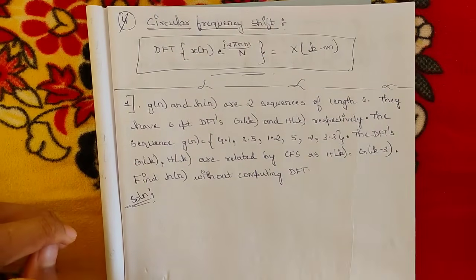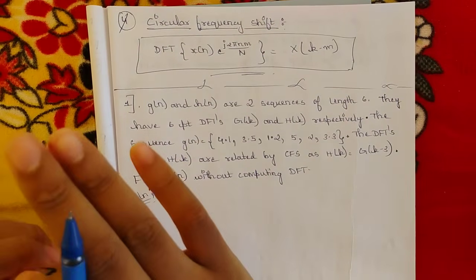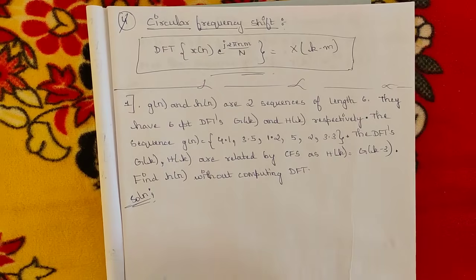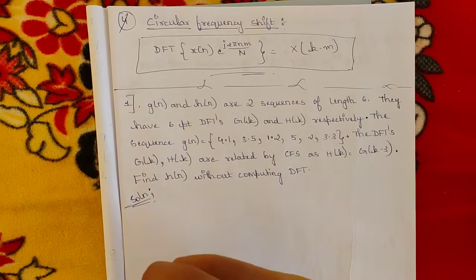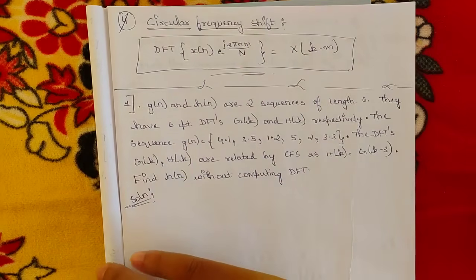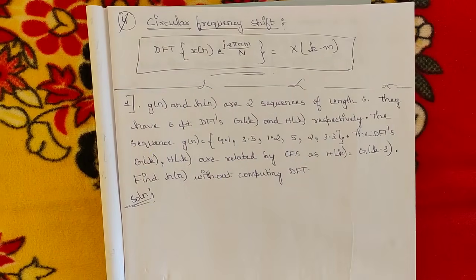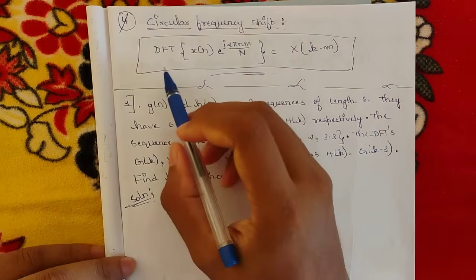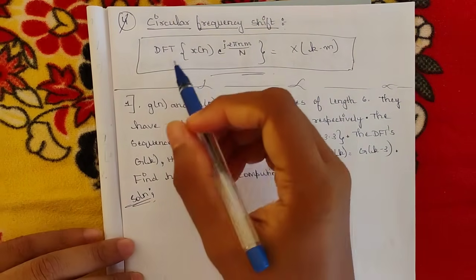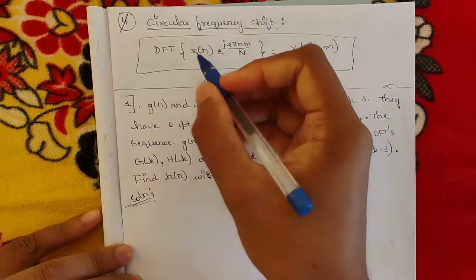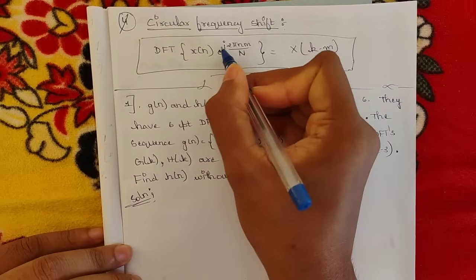If you know time shifting, then frequency shifting is very easy — it's just the inverse process of time shifting. Just as we compute IDFT, similarly using the circular time shift you should be converting for circular frequency shift. Let's see the formula and one question to get an idea about this circular frequency shift property.